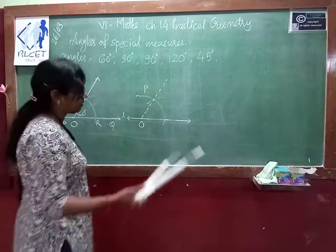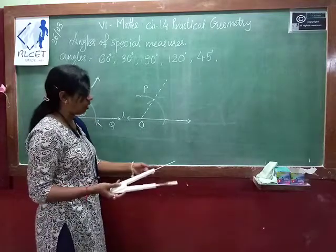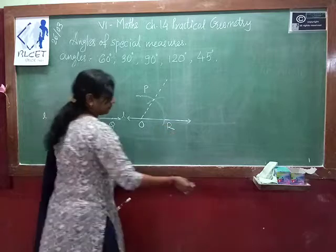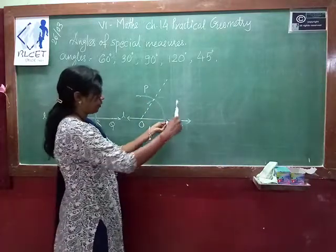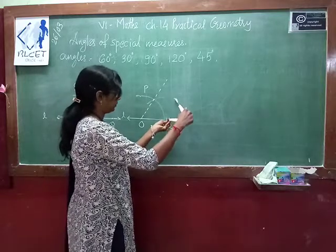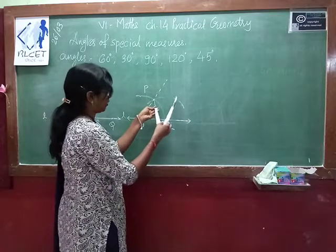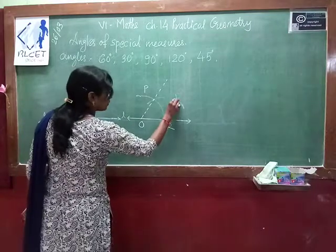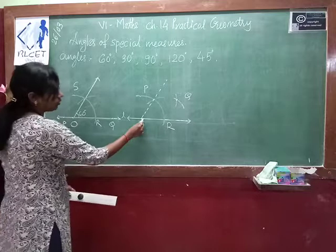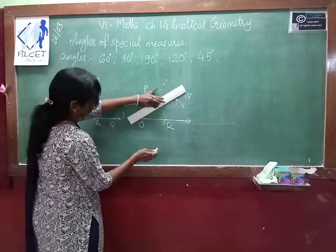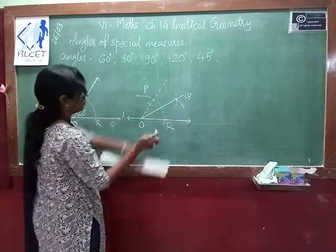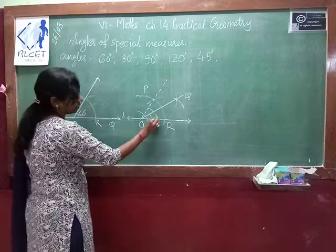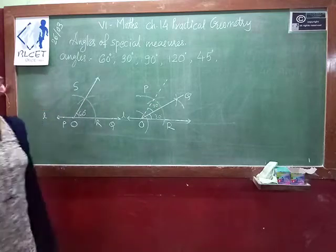Without changing the measurement used to draw this arc, we bisect this angle. Name the arc intersection points. From R keep your pointer and draw an arc, and from P keep your pointer and draw another arc. You get one common intersecting point — name it Q. Now join O and Q. This is the bisection of the 60 degree angle, giving you 30 degrees on each side.